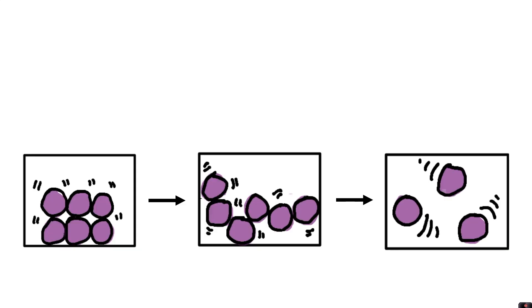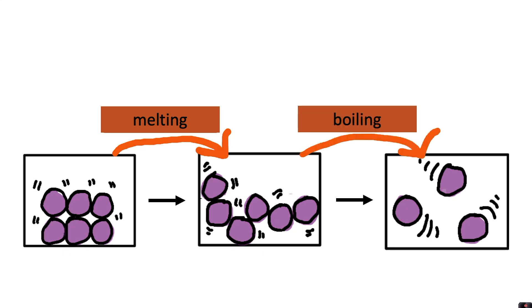There are five different changes of state. Let's start by first looking at the changes of state that happen if you start off with a solid and heat up the substance. Heating a substance from a solid into a liquid is called melting, and heating a substance from a liquid into a gas is called boiling.